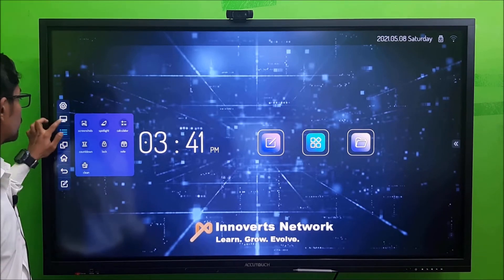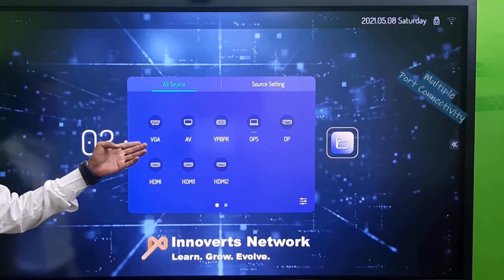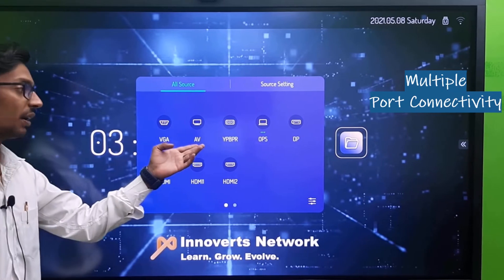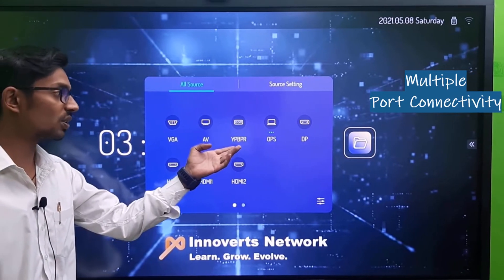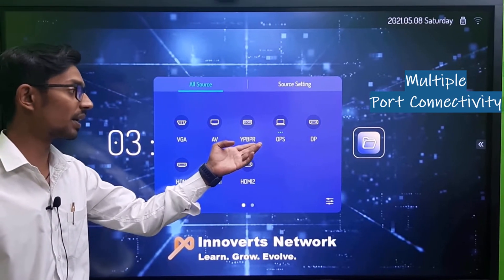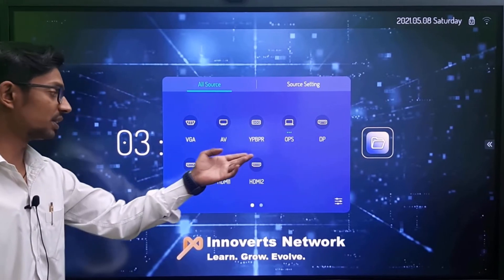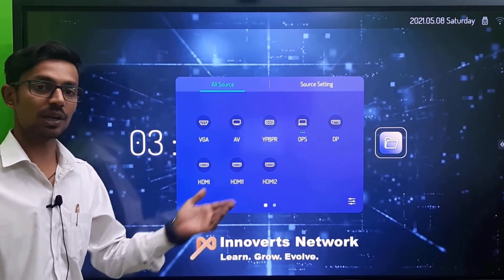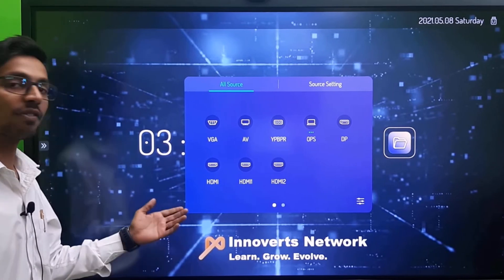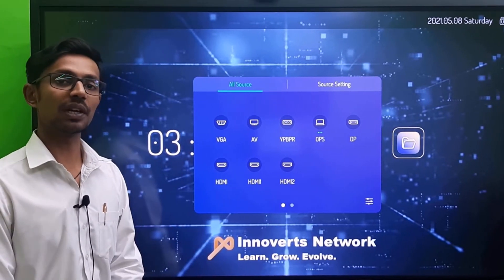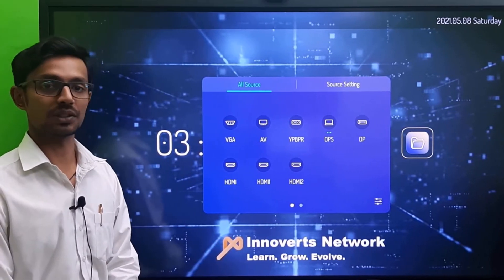To connect various devices, we have multiple port options which can be accessed over here using VGA, or you can connect your set-top box using YPbPr or DP for your PC, and three HDMI slots. You also have three plus USB ports where you can connect multiple USB options as well.